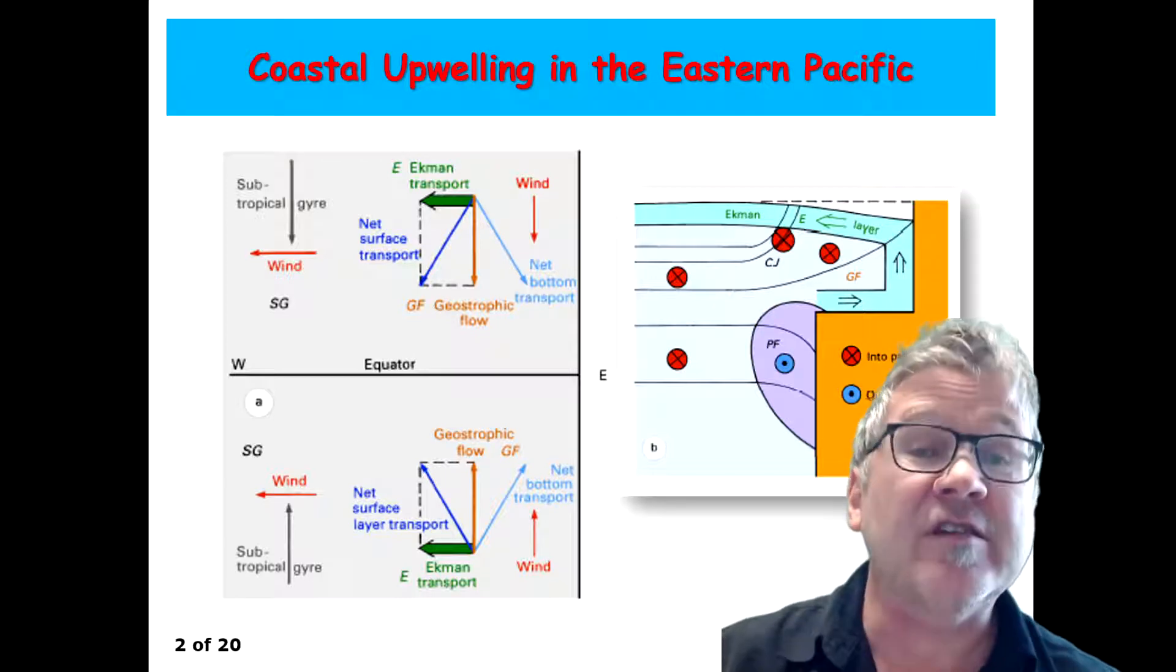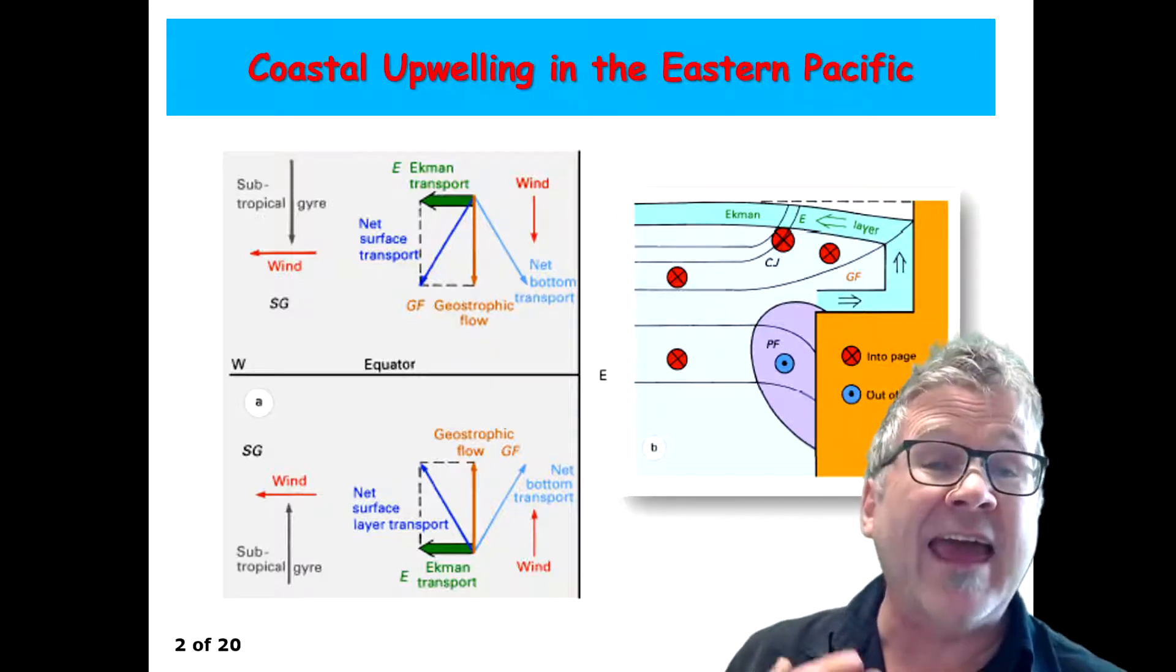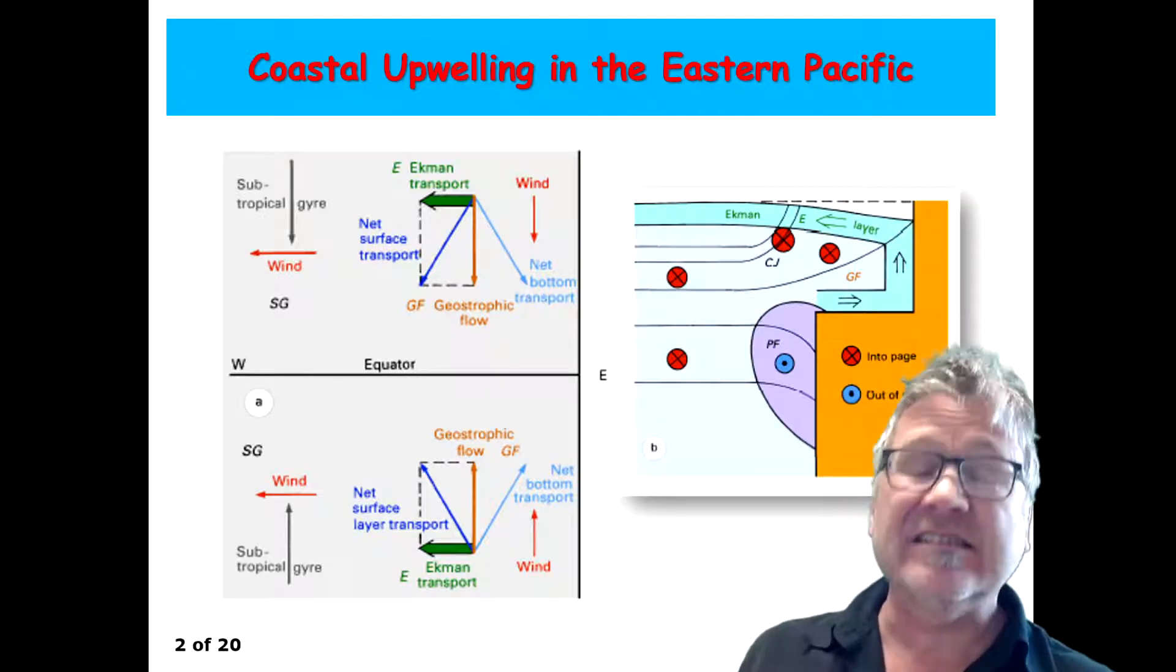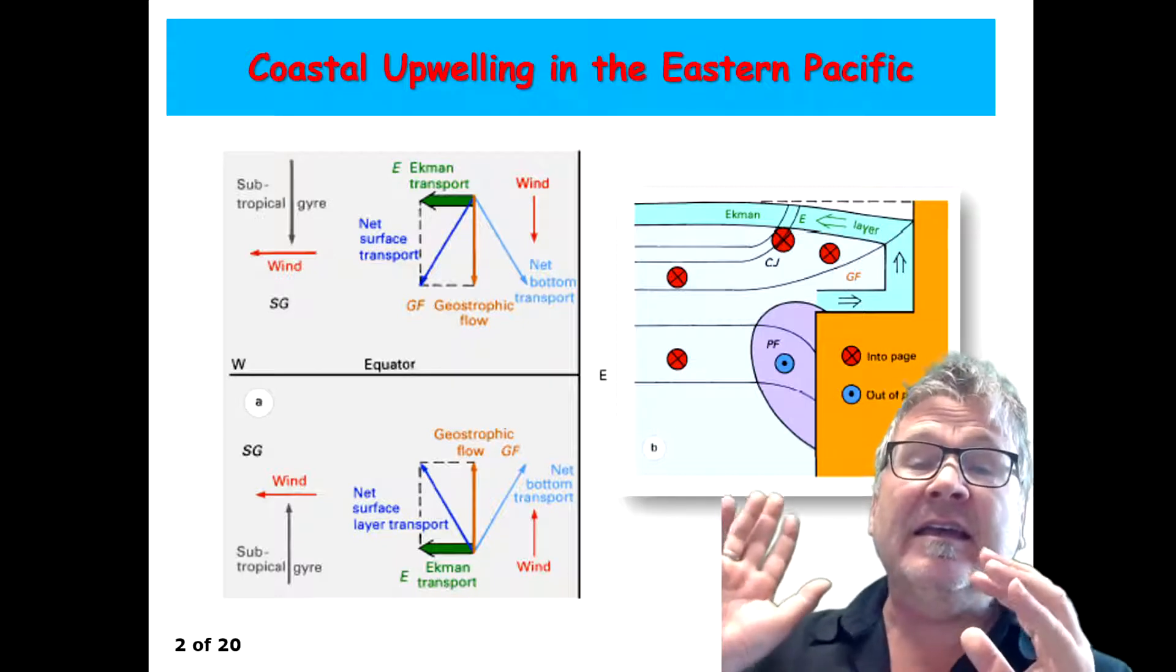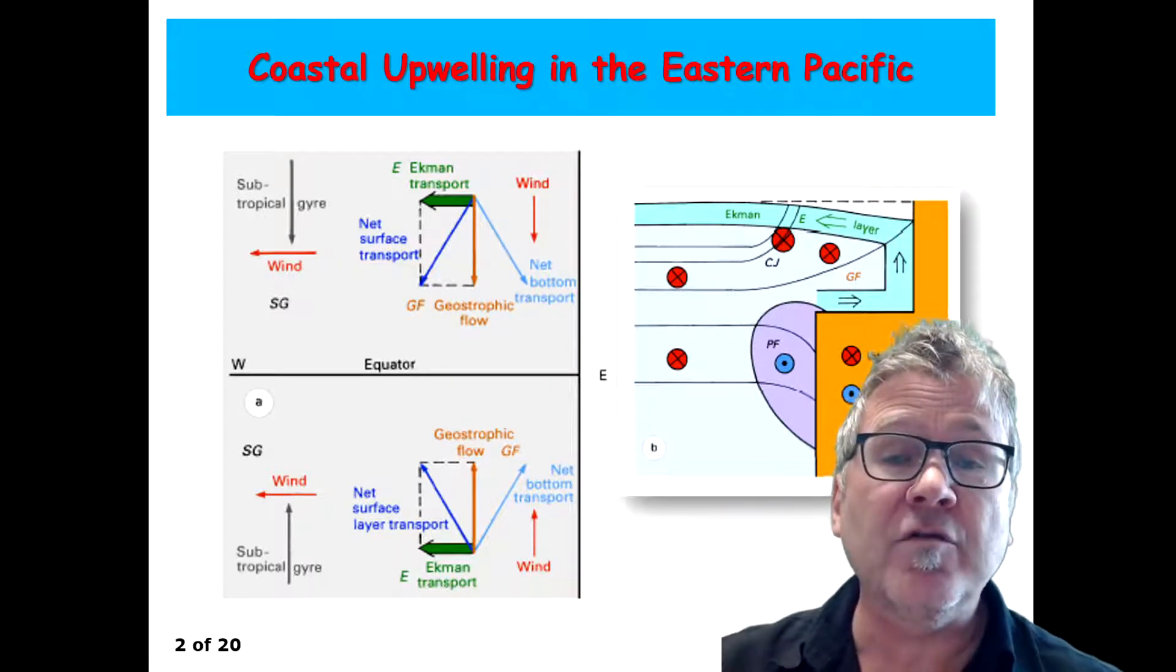So this is the starting point of this process. There is an Ekman transport away from the coast. And what this mechanism does, it lowers the sea surface near the coast.